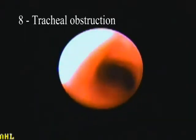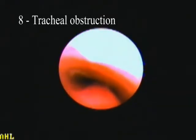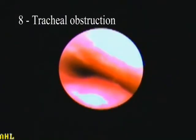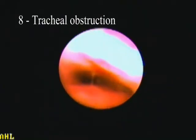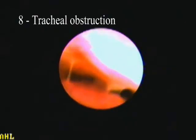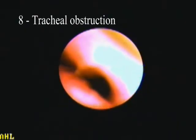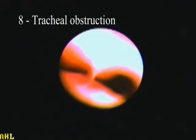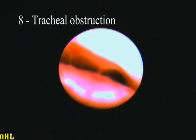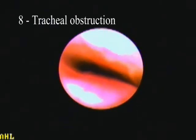Tracheal obstruction with a pulsatile anterior aberrant innominate artery 1-2 cm above the carina, with fish mouth appearance of the trachea, may be associated with an aberrant right subclavian artery. If symptoms are present, vascular decompression may be needed. Tracheostomy is not to be done.